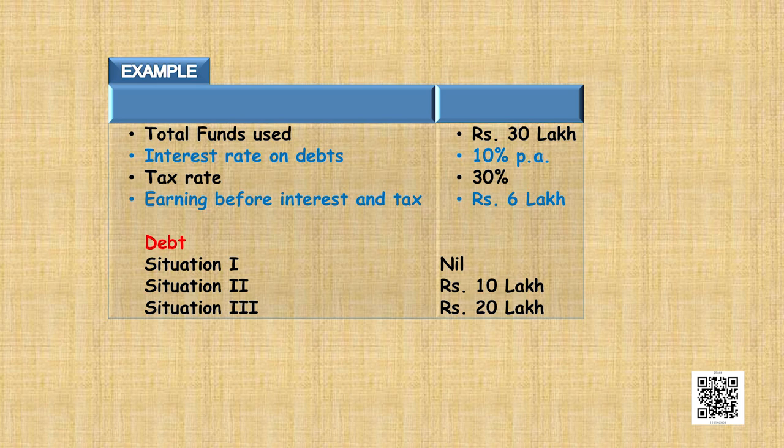Let us take a practical example. A company wants to make a financial decision of investing rupees 30 lakhs. The interest on debts issued is 10 percent per annum, the tax rate is 30 percent, and earnings before interest and tax is rupees 6 lakhs. We consider three situations: no debt, debt of rupees 10 lakhs, and debt of rupees 20 lakhs. The profit before interest and tax is 6 lakhs in all three situations. In situation 1 there is no interest; in situation 2 interest on 10 lakhs at 10 percent is 1 lakh; in situation 3 interest on 20 lakhs is 2 lakh rupees.